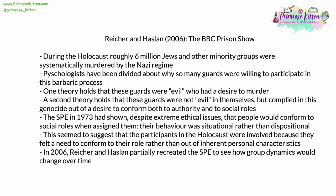During the Holocaust, towards the latter end of World War II, roughly 6 million Jews and other minority groups were systematically murdered by the Nazi regime. Psychologists since then have been divided about why so many guards were willing to participate in this barbaric process of mass murder. One theory holds that these guards were inherently evil — they had a desire to murder. A second theory holds that these guards were not evil in themselves, but complied in this genocide out of a desire to conform both to authority and to the expected social norms.